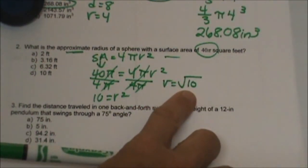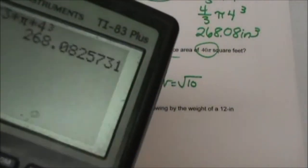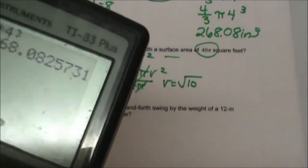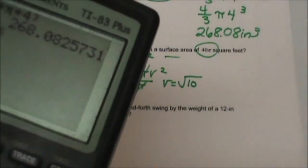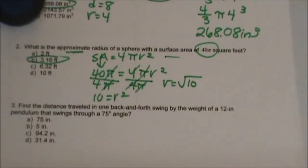Don't be tricked because one of the distractor answers is 10, but we know that's not the answer. What is an approximation for the square root of 10? 3.16, so the answer again is B.